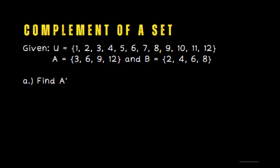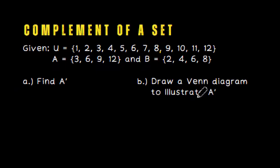Set A contains the elements 3, 6, 9, 12. Set B contains the elements 2, 4, 6, 8. We are tasked to find the complement of set A. Of course, we will draw a Venn diagram here to illustrate the complement of A.